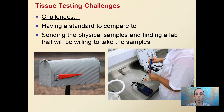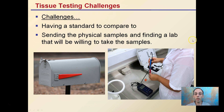The challenges — particularly referring to cannabis — include having a standard to compare to. There's a lot of tissue testing data for crops like corn and tomatoes, but it can be a little hard for cannabis. Also, sending physical samples and finding a lab willing to take them can be a challenge. Shipping them in the mail has some potential issues, and certain labs simply do not want to deal with cannabis samples. Be mindful to call the lab ahead of time before sending anything, because tissue testing can offer a valuable tool to evaluate the nutrients inside your plant.